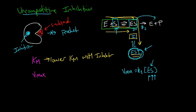Consequently, we can never reach the same maximal velocity. So in an inhibited reaction, we also see a lower Vmax. So this is with the inhibitor.